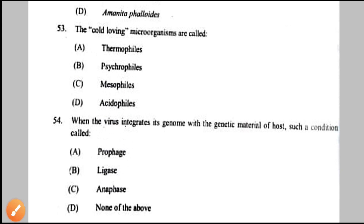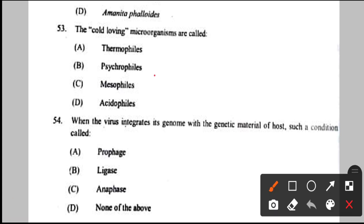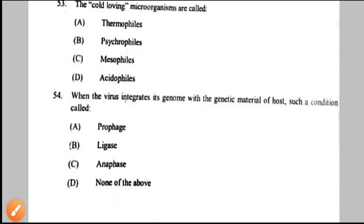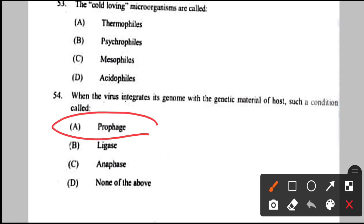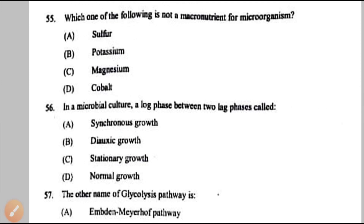Question number 53: cold loving microorganisms are called psychrophiles — option B. Their optimum growth temperature is 15°C, ranging from below 0°C to 20°C. Question number 54: when the virus integrates its genome with the genetic material of the host, such a condition is called prophage — option A. This occurs in the lysogenic life cycle of a virus.